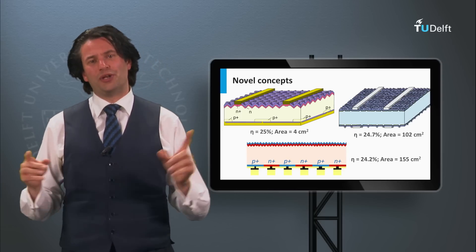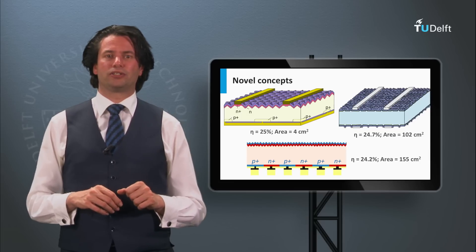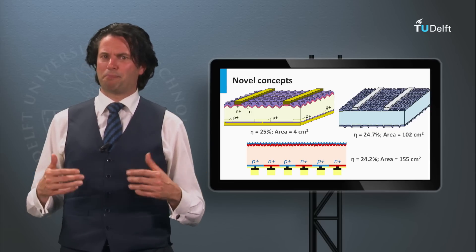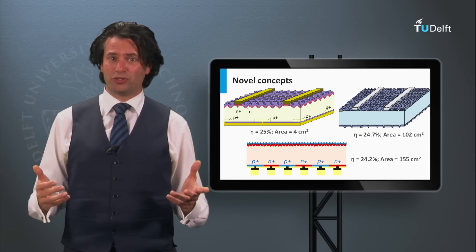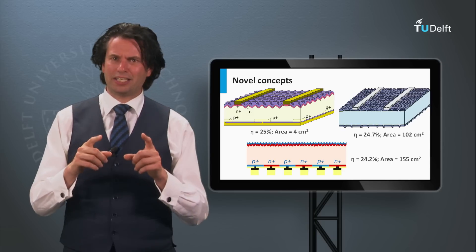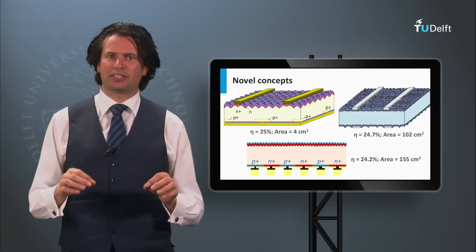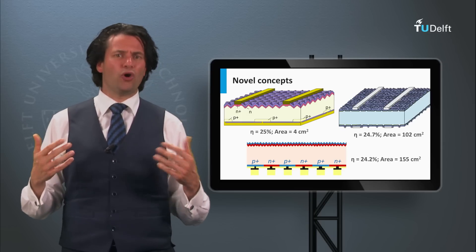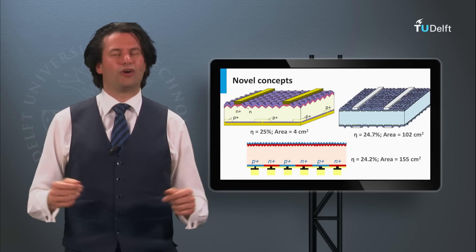Now we know the efficiencies of solar cells. However, in practice we install panels on our roof. In the next block we will answer the question, how do we make solar modules out of solar cells?